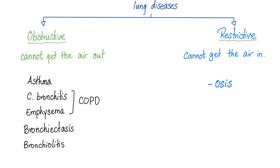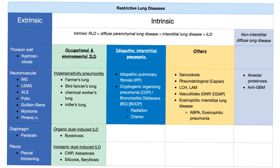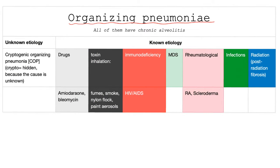Lung diseases are divided into obstructive and restrictive. Obstructive: I cannot get the air out. Restrictive: I cannot get the air in. Cryptogenic organizing pneumonia is a restrictive lung disease. Restrictive lung diseases are either extrinsic or intrinsic. Intrinsic is either diffuse parenchymal or non-parenchymal. Diffuse parenchymal is occupational/environmental, idiopathic interstitial, or others. All of the organizing pneumonias are here, and all of them have one thing in common: chronic alveolitis.